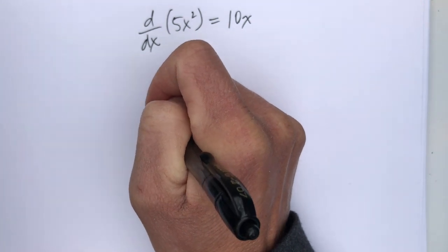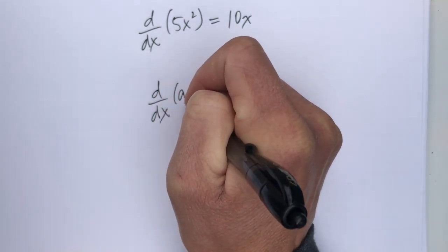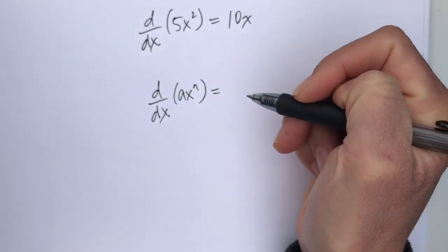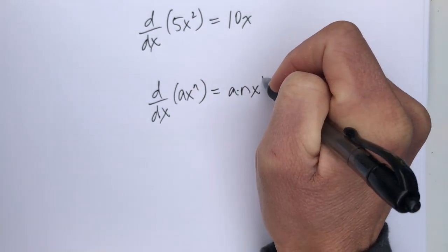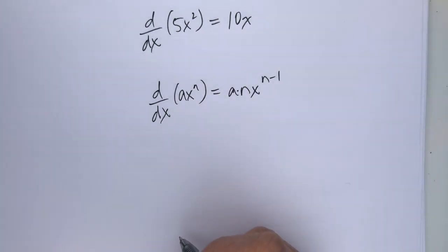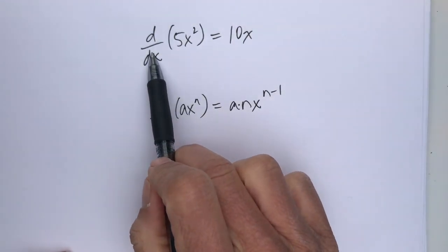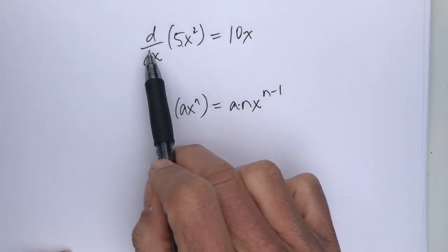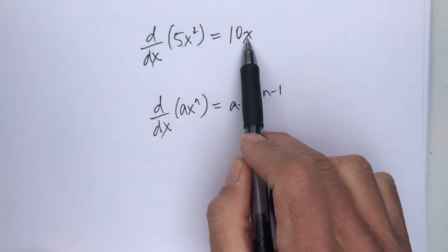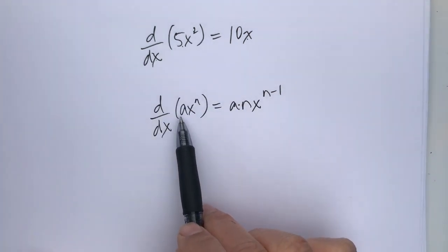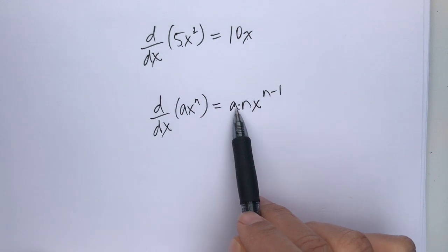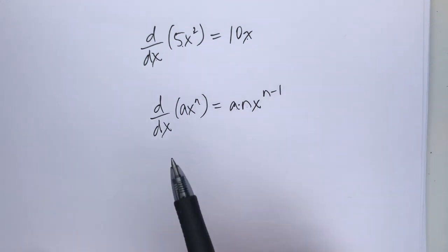Or, our shortcut, d dx of ax to the n power is a times n times x to the n minus 1. So, what we're doing in these two examples is saying the derivative of 5x squared, so the derivative of a function with respect to x is 10x. The derivative of ax to the n is a times n times x to the n minus 1 power.